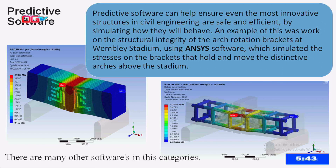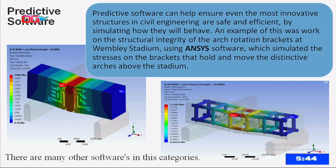We also have predictive software in civil engineering. Today we talk about AI — artificial intelligence — which involves software programs developed to make machines think the way human beings think. In civil engineering, we have predictive software that can help ensure innovative structures are very safe. We can simulate a structure — for example, how a load is distributed in a beam, and how the reinforcement inside the beam behaves. This is generated by software called ANSYS. We also use AutoCAD and other software for 3D architectural modelling.